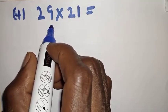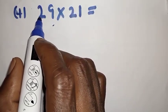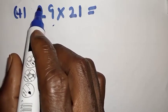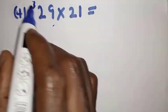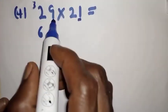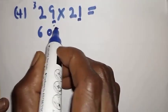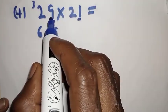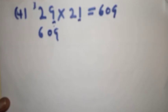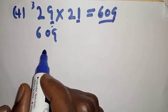Number four: 29×21. The tens digit is 2, the next digit after 2 is 3, so 2×3=6. Write 6. Then the units digits: 9×1=9, written as 09. Therefore 29×21=609. You can see it's very simple.